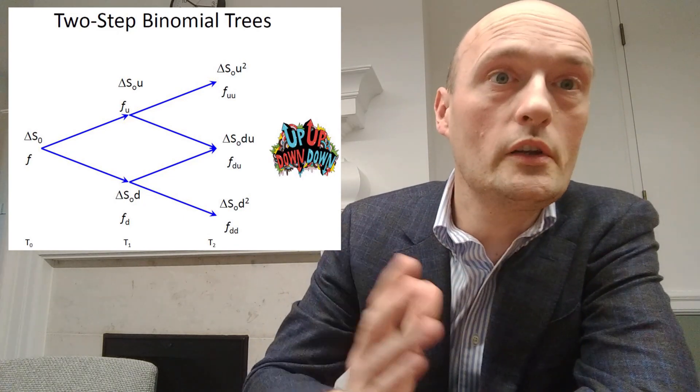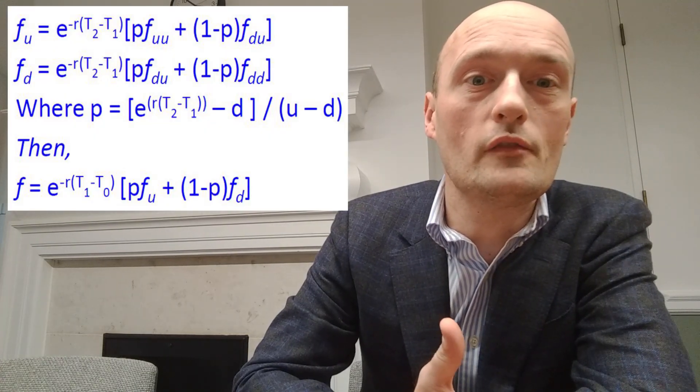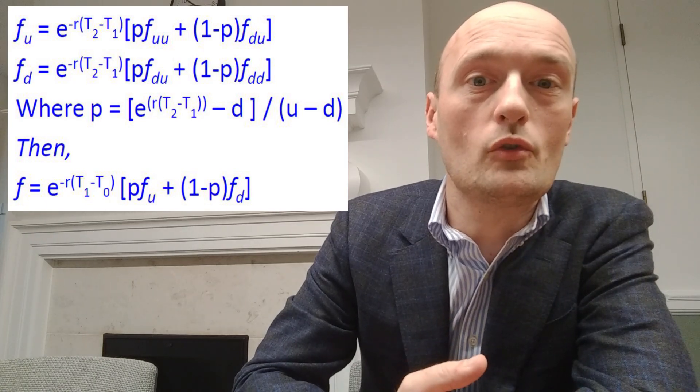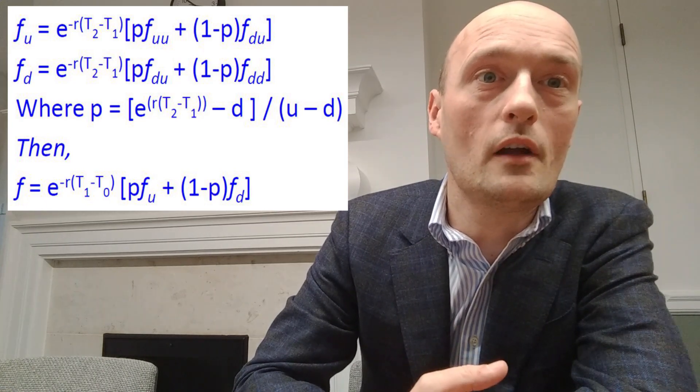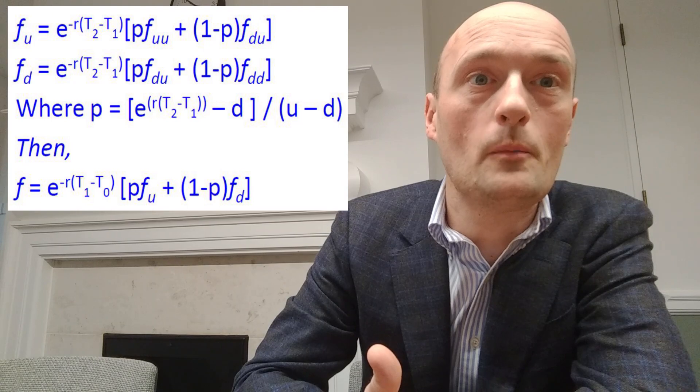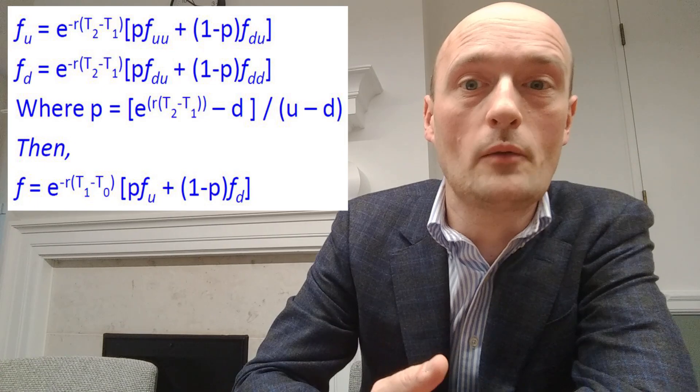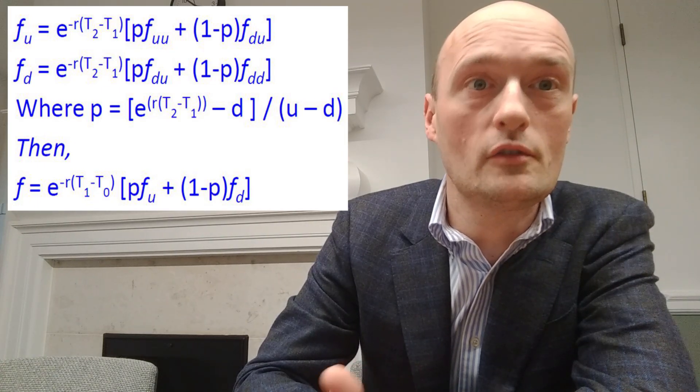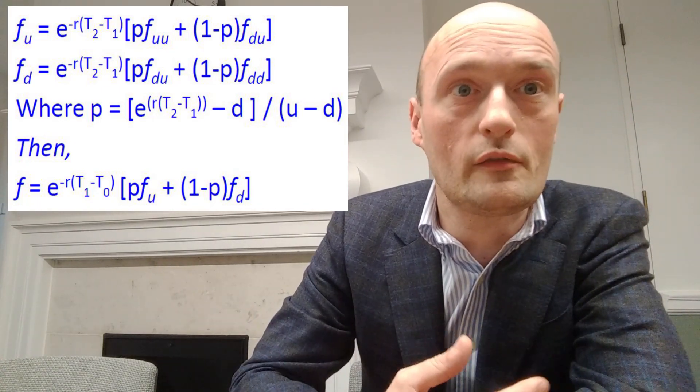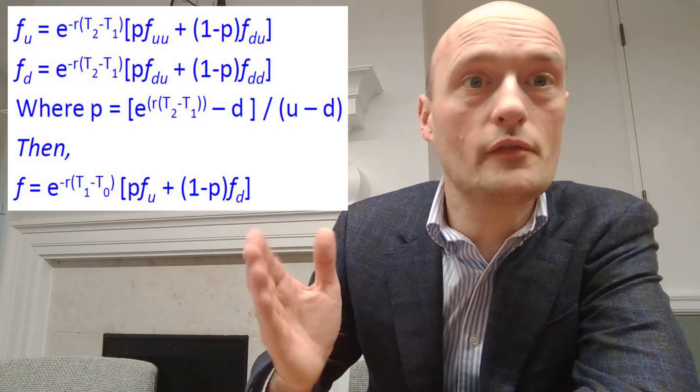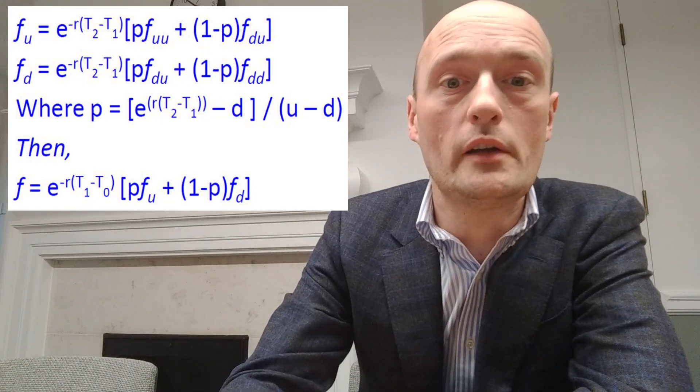So we're going to use the same formula we used before, which is the value of the derivative is the present value of the risk neutral probability of an up move times the payout in an up scenario, plus the risk neutral probability of a down move times the payout of the derivative in the down scenario, present valued. And so that's all we have to do and we just have to do it for each step of the binomial tree.